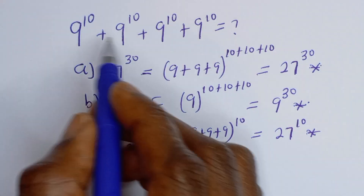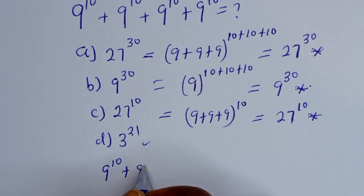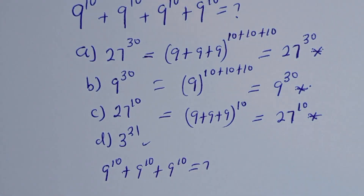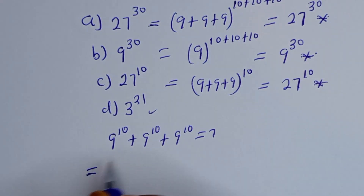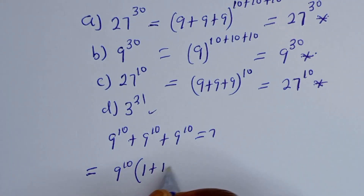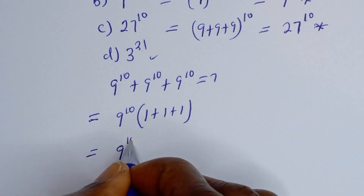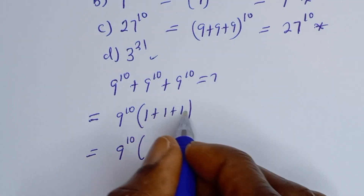From the given question we have 9 to the power of 10 plus 9 to the power of 10 plus 9 to the power of 10. We factor out 9 to the power of 10 as the common term, giving 9 to the power of 10 times the bracket 1 plus 1 plus 1.